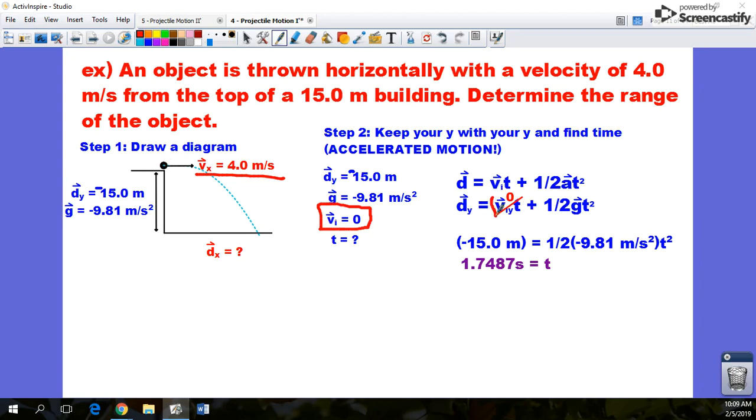So that makes the first term of this kinematics formula we're going to use, d equals v_i*t plus 1/2*a*t squared, end up just being zero. That first term cancels right out. Here's where I substituted it into that formula, put in the negative sign on the 15 meters, put in the acceleration due to gravity,